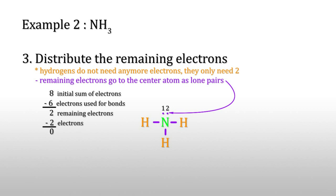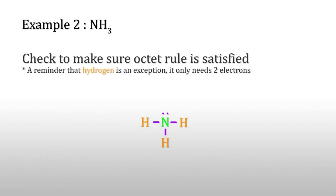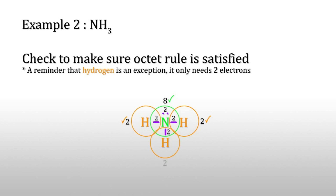Check to make sure the octet rule is satisfied. Hydrogen is an exception — it only needs two electrons. So this is the Lewis dot structure for ammonia.